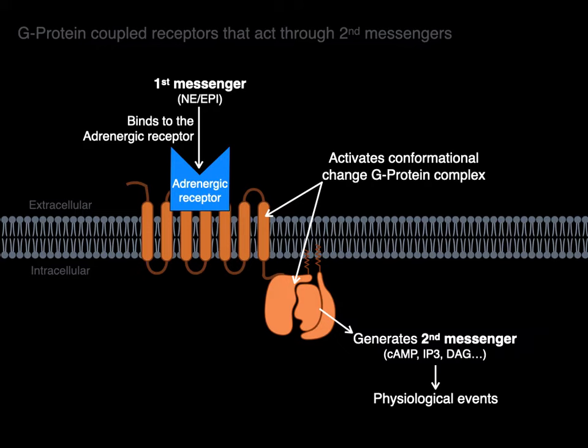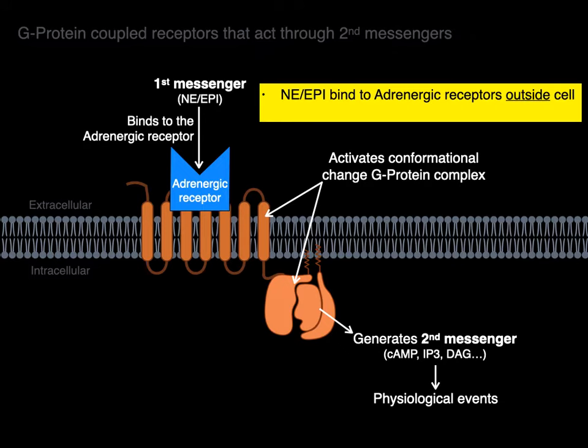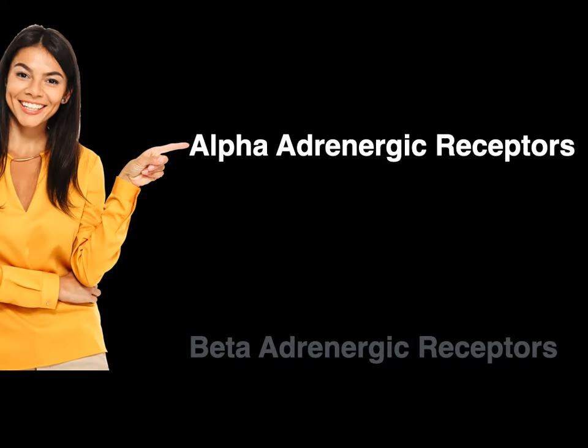This is why some G-proteins can cause vasoconstriction and others vasodilation of smooth muscle. When norepinephrine binds to adrenergic receptors on the outside of a cell, it activates secondary messengers on the inside of a cell.